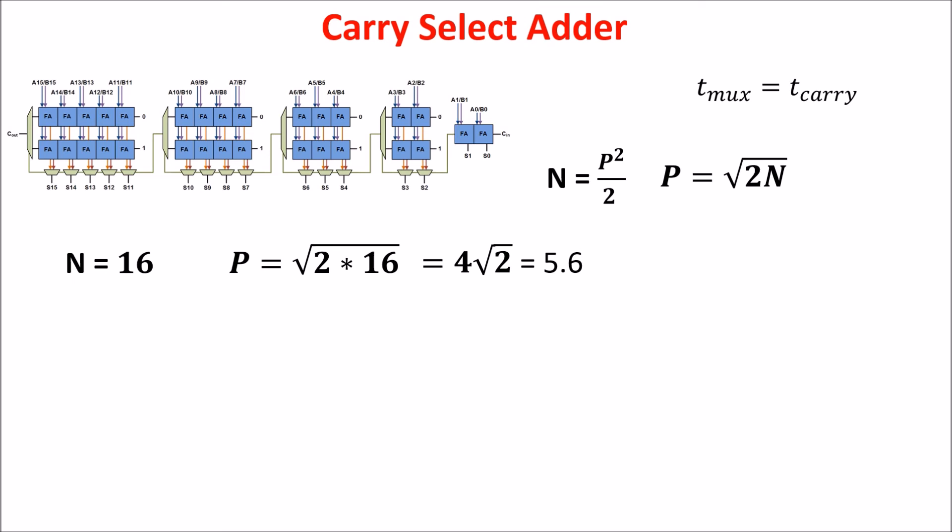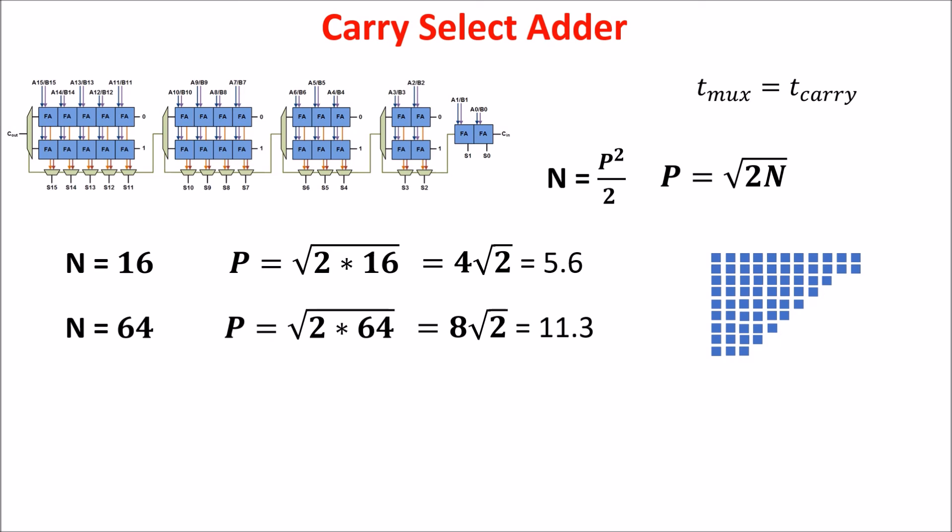If we assume N equals 64, we have P equals 11.3, and indeed we saw previously we designed 11 blocks for our smart arrangement.